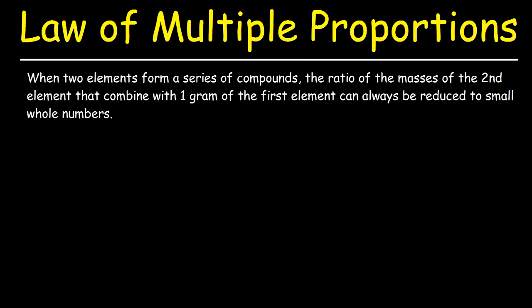In this video we're going to talk about the law of multiple proportions. This law states that when two elements form a series of compounds, the ratio of the masses of the second element that combined with one gram of the first element can always be reduced to small whole numbers.